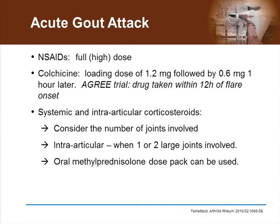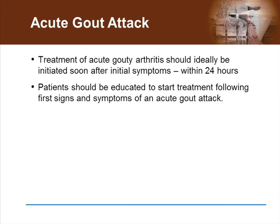The AGREED trial has shown that low-dose colchicine is effective in acute gout when taken within 12 hours of onset of the acute attack. A loading dose of 1.2 milligrams is followed by a dose of 0.6 milligrams one hour later. Both systemic and intra-articular corticosteroids are effective, and the choice is usually based on the number of joints involved. When one or two large joints are involved, intra-articular corticosteroids are practical and effective. The acute gout attack should ideally be treated soon after initial symptoms.